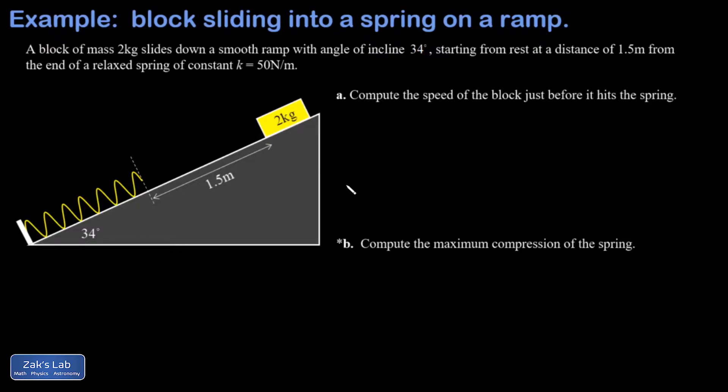When I look at part a, I want the speed of the block right before it hits the spring. Well that depends on the initial height of the block, but what we have is the distance between the spring and the block, that's a hypotenuse of a right triangle, and what we want is the vertical leg to get that initial height. So we'll go ahead and draw the right triangle real quick and that also has an angle of 34 degrees.